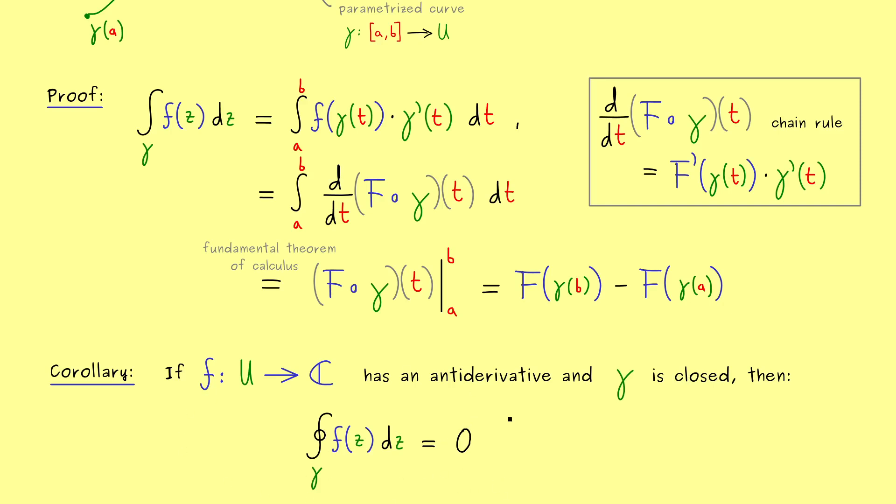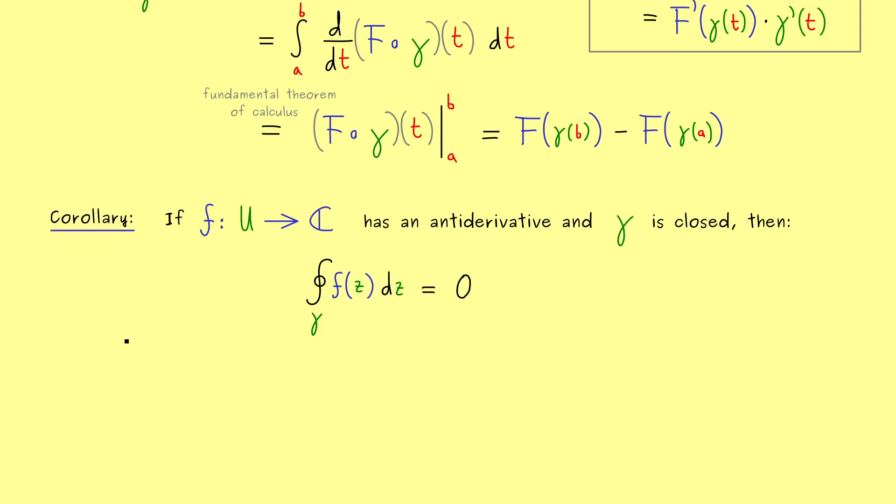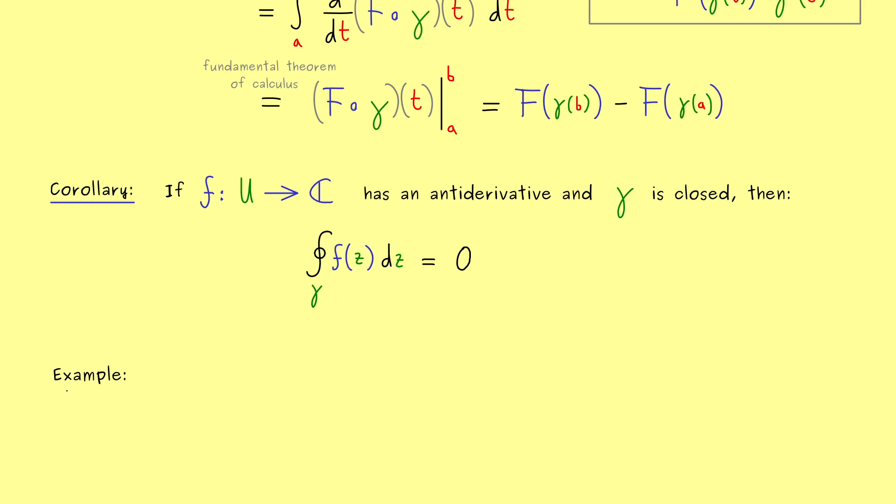So you see this is also an important fact you should remember. A closed integral gives you zero if we have an antiderivative on this domain. Okay then I would say let's look at some examples now.